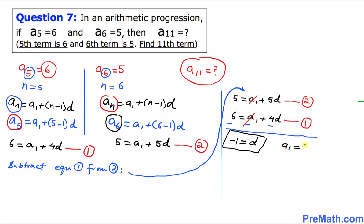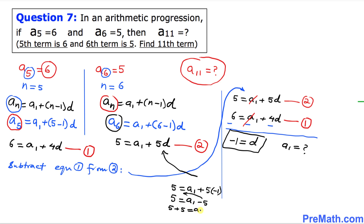Now we want to find the value of a(1). I am going to plug d equals negative 1 into equation number 2. So: 5 equals a(1) plus 5 times negative 1, which gives 5 equals a(1) minus 5. Moving negative 5 to the other side: 5 plus 5 equals a(1). That means a(1) turns out to be 10.